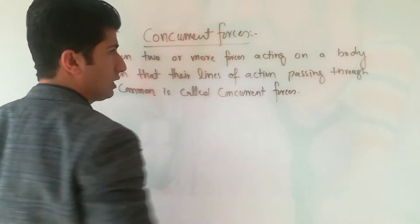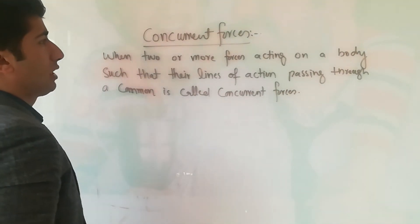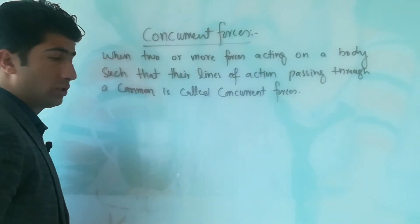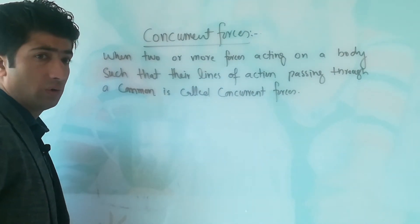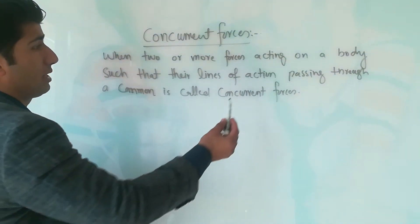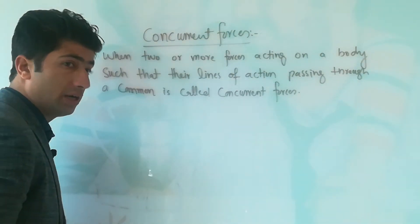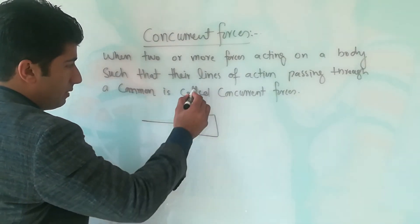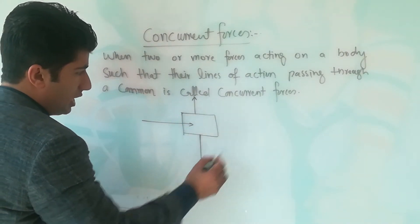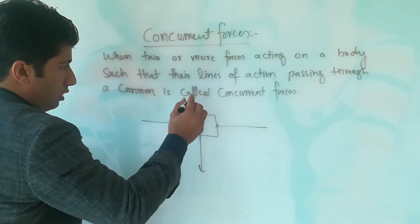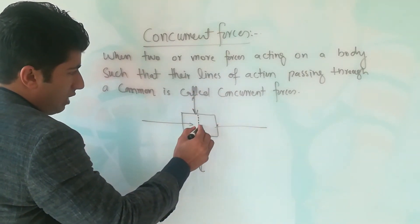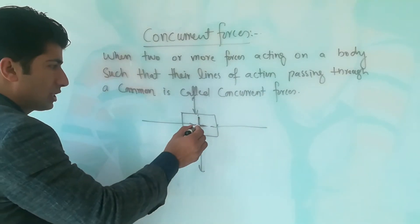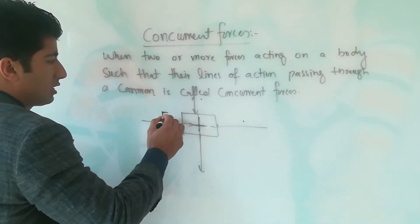Concurrent forces ka kya matlab hai? Jub kishi object per dho ya dho se zyada forces act kerethe hai aur us forces ki joh line of action hai woho a common point se pass hoota hai, to is ka matlab hai ki ye forces concurrent forces hai. Agar aap ji object lelay aur is per is direction me bhi is direction me bhi forces act karen, tamam forces ki joh line of action hai ye a common point se pass hoota hai.